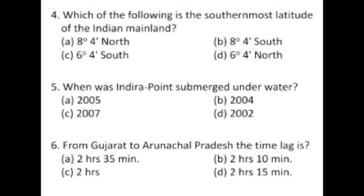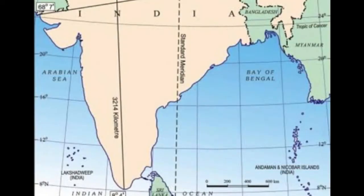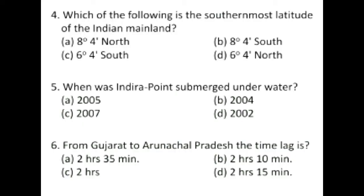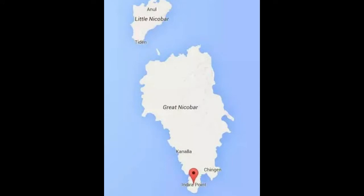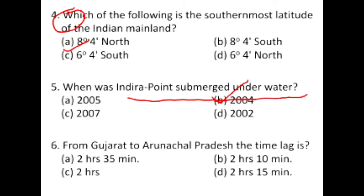What is the southernmost latitude of India mainland? We will discuss the Indian mainland, Lakshadweep, Andaman, Nicobar, and Indra Point. The southernmost point of India is Cape Comorin or Kanyakumari, at 8 degrees 4 minutes north, since India lies wholly in the northern hemisphere. Indra Point, India's southernmost point, was submerged under water due to the 2004 tsunami.